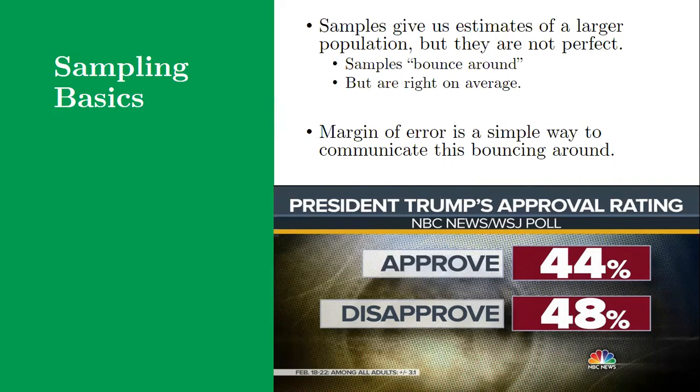You may have seen this margin of error statistic that goes along with public opinion polling. If you look at the headline numbers, the big 44, 48 in this poll of President Trump's approval rating, in the fine print it has plus or minus 3.1%, which means given what we know about samples and how they bounce around, the numbers that we're quoting you could be off. They could be too high by 3%, or too low by 3%. Samples on average being right can still be off a little bit one way or another.